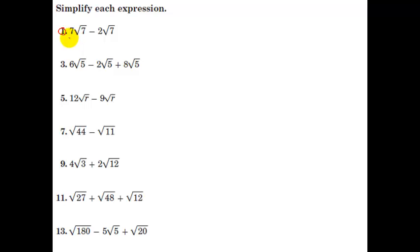So the first one, 7 root 7 minus 2 root 7. Because the square root of 7 matches up, these are like terms, and I just go 7 minus 2, which is 5 root 7. Next one. These are all root 5s. So 6 minus 2 is 4, plus 8 is 12. So I have a grand total of 12 root 5. So the number in front, the coefficient, is how many you have, and then the square root part is like what it is, basically.